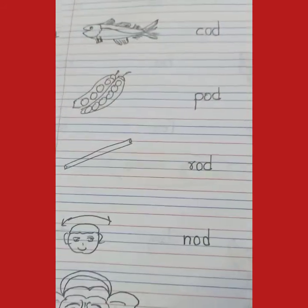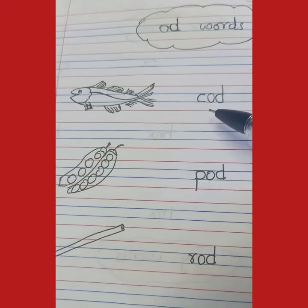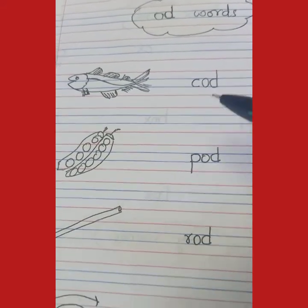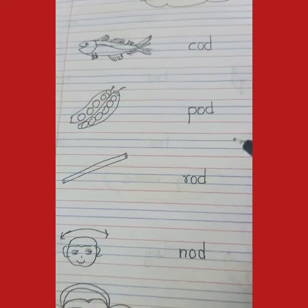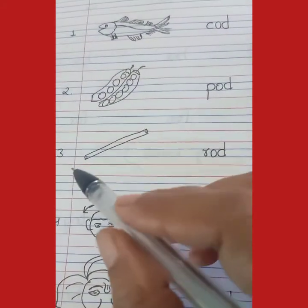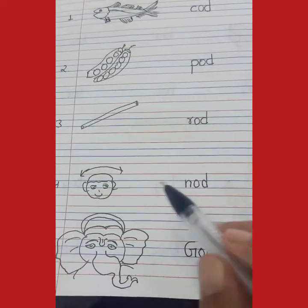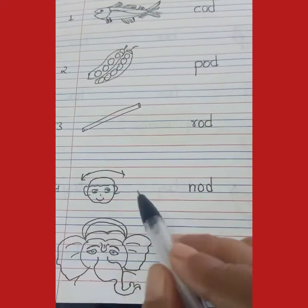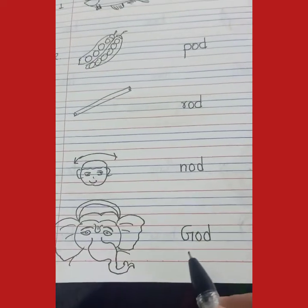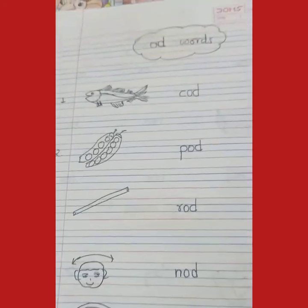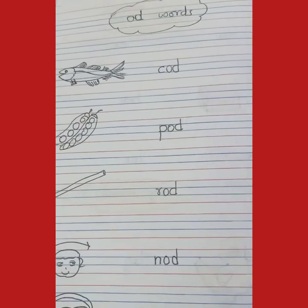Again, let us revise all the words. God — this is one kind of fish. Ek tarah ki fish hai yeh. Pod. And this is God. So children, you learn all these words and write them in your English copy.